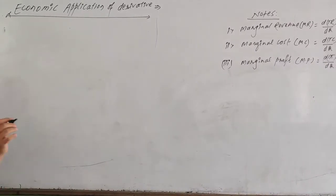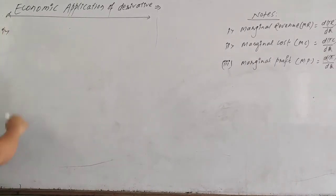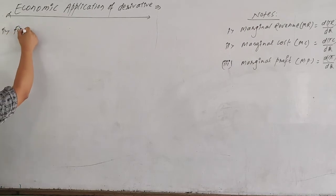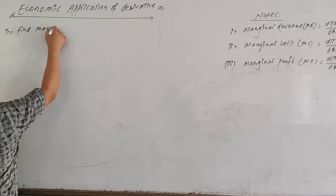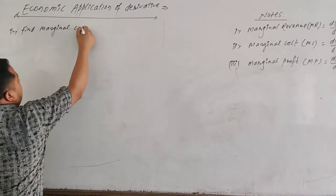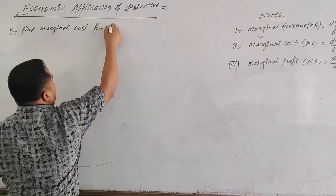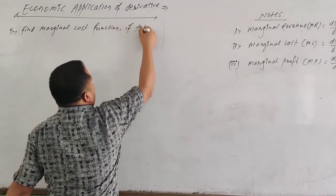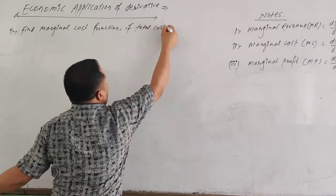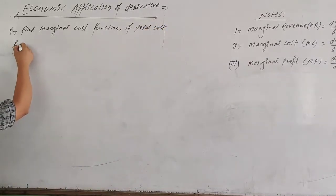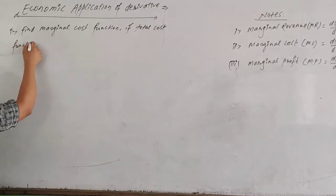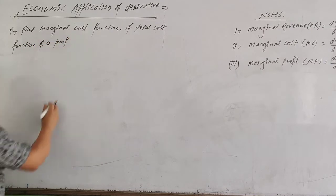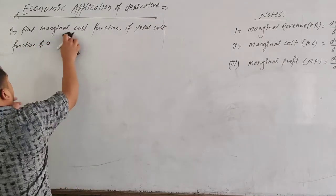First, we will see an example. The marginal cost function is derived from the total cost function of a productive form.